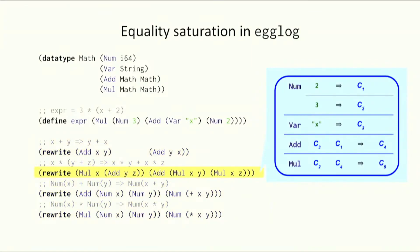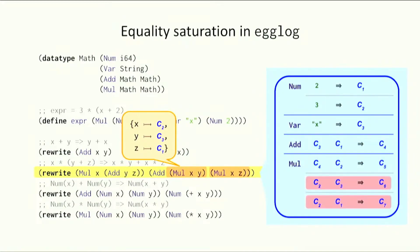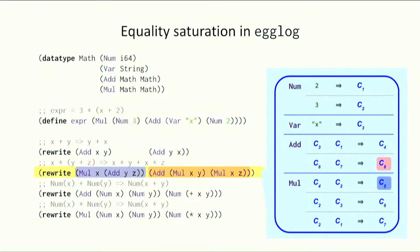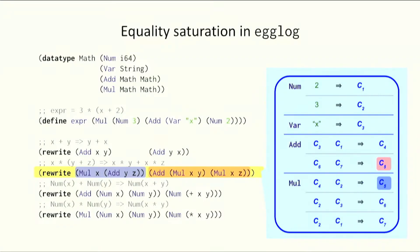Let's zoom in on how the distributivity rule behaves. It matches the left-hand side with relational e-matching over the database. For each match, we track the corresponding value for each variable and build the substitution, then apply it to the right-hand side and insert bottom-up. Egglog inserts the two sub-expressions for multiplication, introduces new elements for the data type, then inserts the top-level addition. The left-hand side maps to element C₅ and the right-hand side maps to C₈. Since we wrote an equation, we must ensure they map to the same value — egglog uses a union find, merging C₅ and C₈, so the left and right-hand sides are now equivalent.